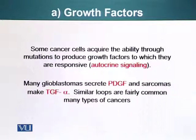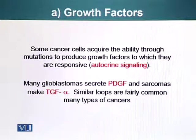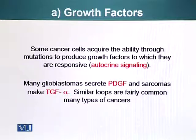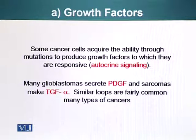Let's look at the first category: growth factors. Some cancer cells acquire the ability through mutations to produce growth factors to which they are responsive. We have talked about autocrine signaling — these cells produce a signaling molecule and have receptors on their surface for that particular signal. For example, many glioblastomas secrete PDGF, platelet-derived growth factor, and some sarcomas make TGF-alpha, transforming growth factor alpha. Similar loops are fairly common in many types of cancers.